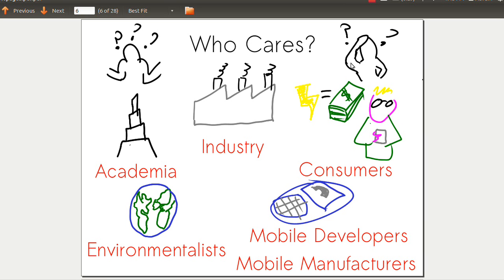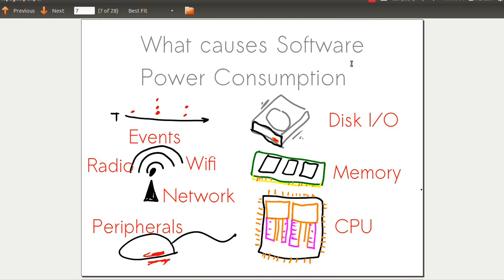Who might care about this? Anyone in academia, industry, consumers, environmentalists, anyone doing mobile development might care because it might affect their bottom line or how long they get to use software or their machinery.